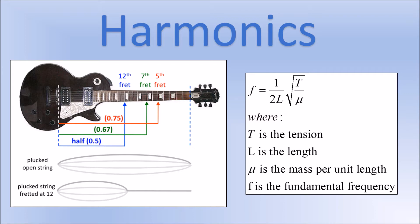There is an equation that describes the different variables that affect the frequency and therefore the pitch of the sound. From this equation: increasing the tension in the string makes the frequency higher; making the string longer makes the frequency lower; and increasing the mass per unit length — making it thicker — also makes the fundamental frequency lower.